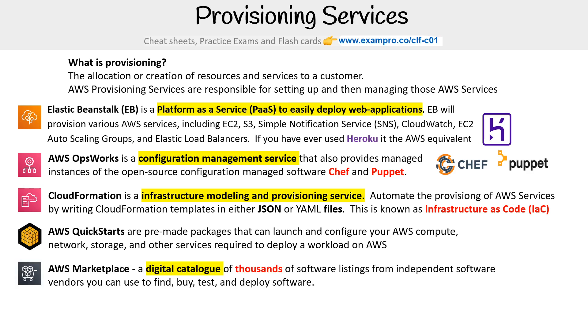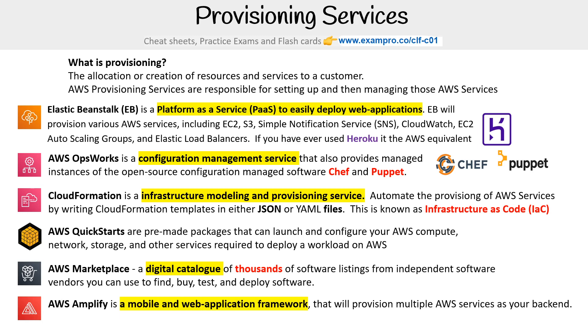Then we have AWS Marketplace. This is a digital catalog with thousands of software listings from independent software vendors that you can use to find, buy, test, and deploy software. You can go there and provision whatever kind of resource you want.